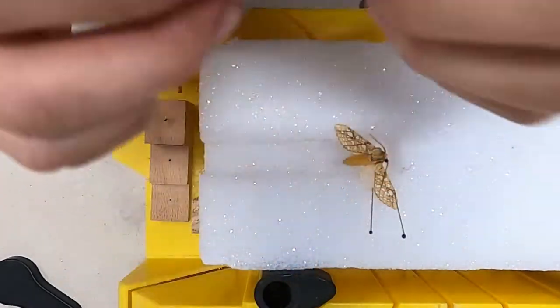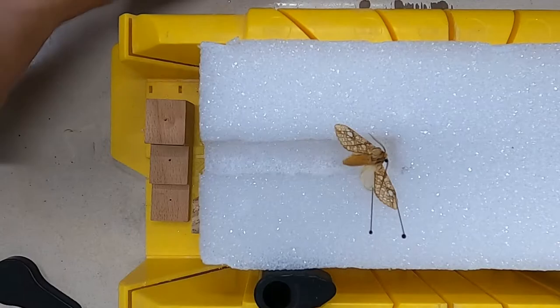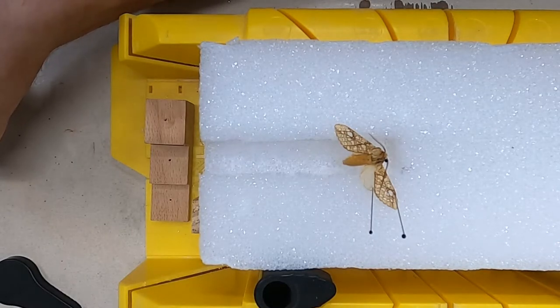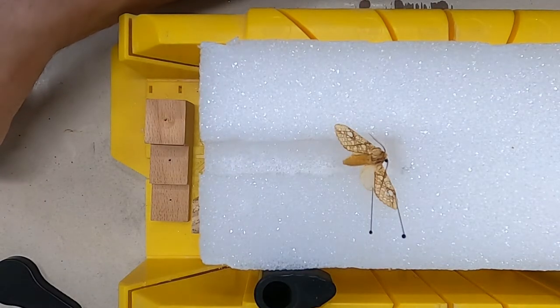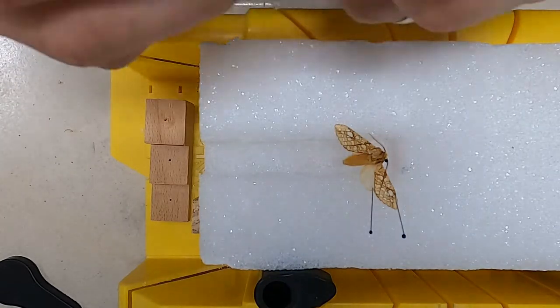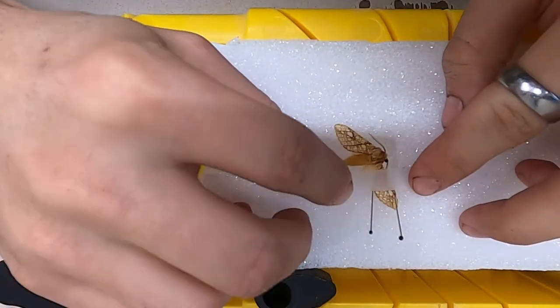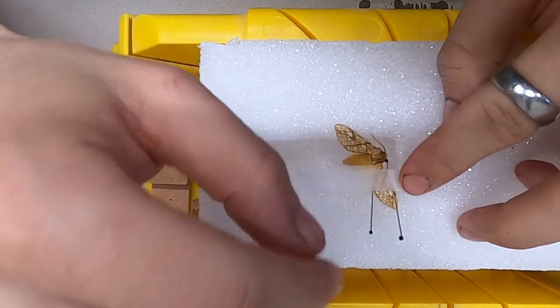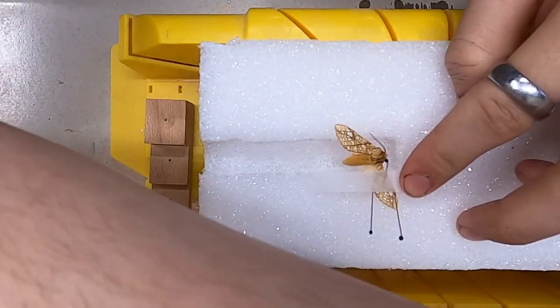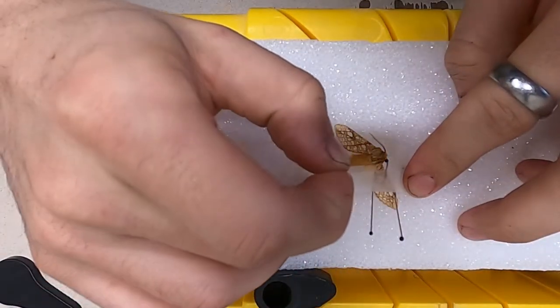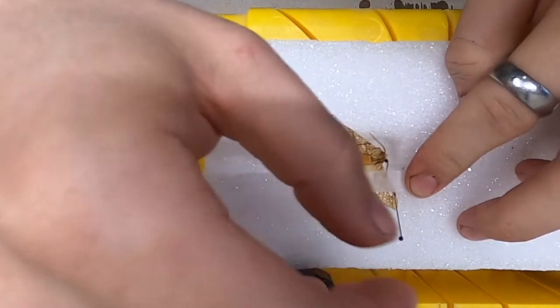After you have the wings spread out in the correct position, you can use some regular paper or some wax paper and stretch it across the wings, and then you put pins through the wax paper but not through the wings. The pressure from the wax paper will keep the wings flat and extended and in the correct position.